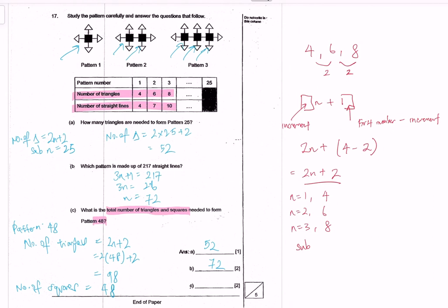And therefore, the total number would be 98 plus 48, which is 146. And that is the final answer for question 17 part C.